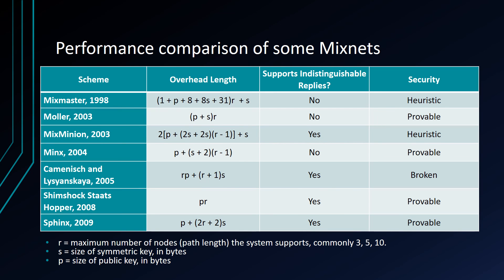Here is a performance comparison of certain mix nets, where r is the maximum number of nodes the system supports, s is the size of the symmetric key, and p is the size of the public key — the public key tends to be a lot larger than the symmetric key. This table comes from the developer of the Sphinx protocol, and it shows that Sphinx has the smallest overhead, with provable rather than heuristic security that has not been broken. Provable security means it's as hard as, for example, factoring. That's all — thanks.